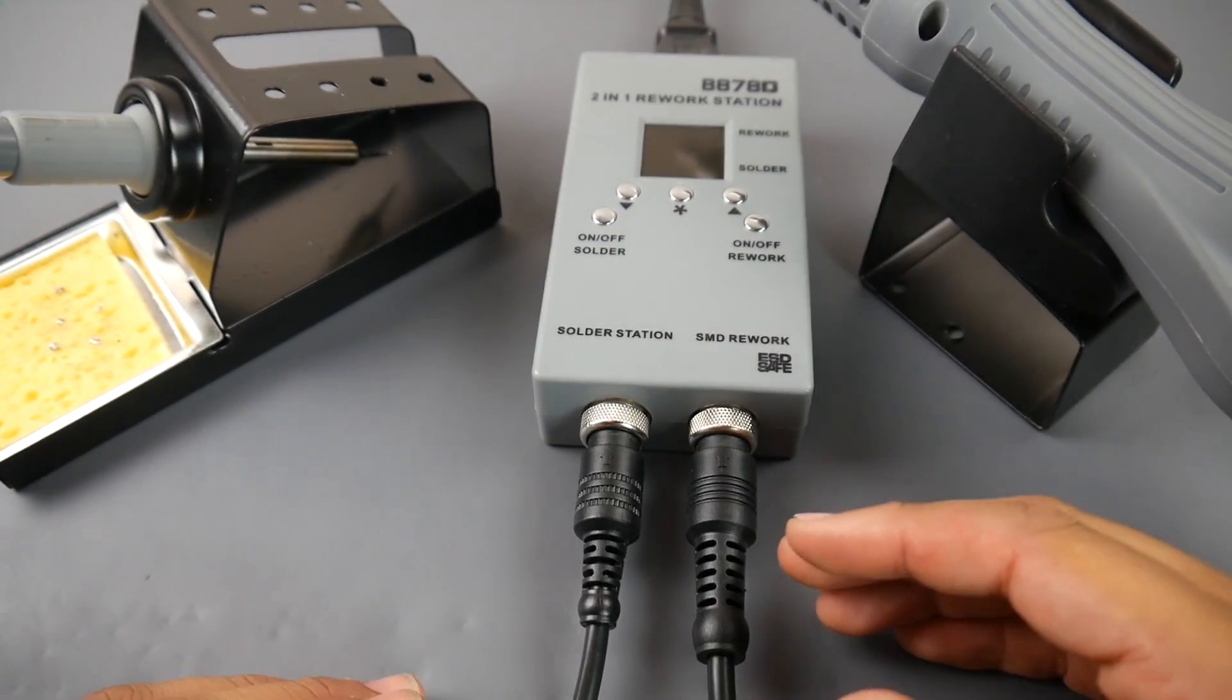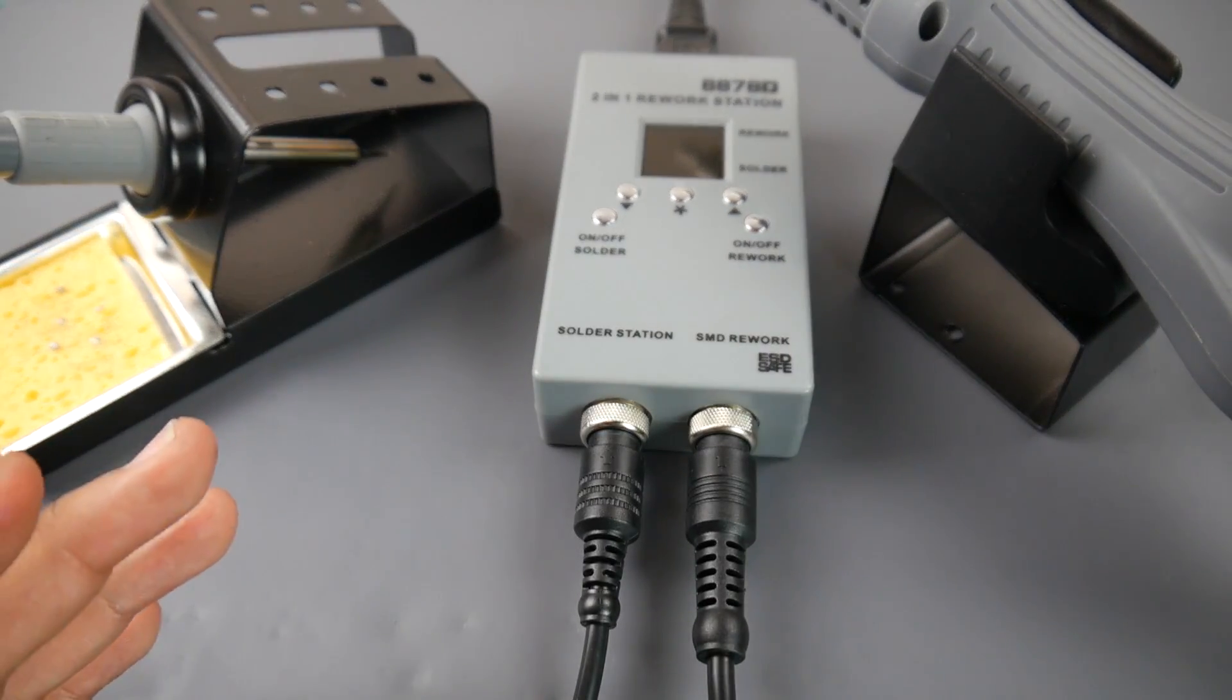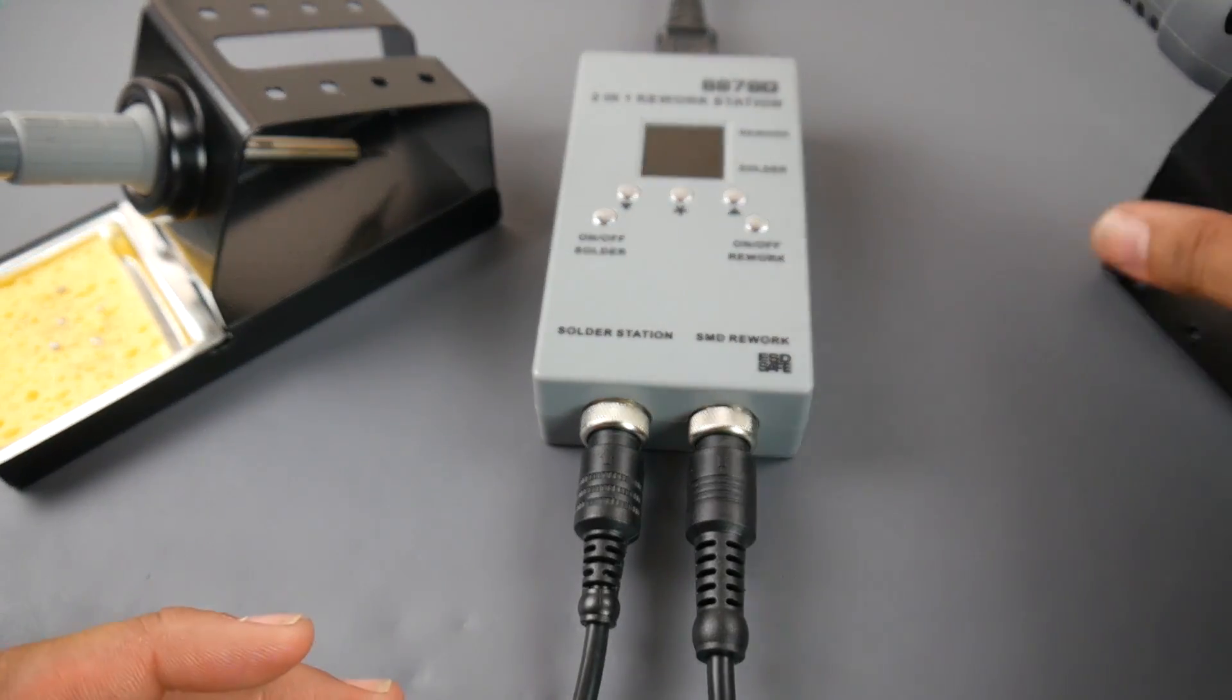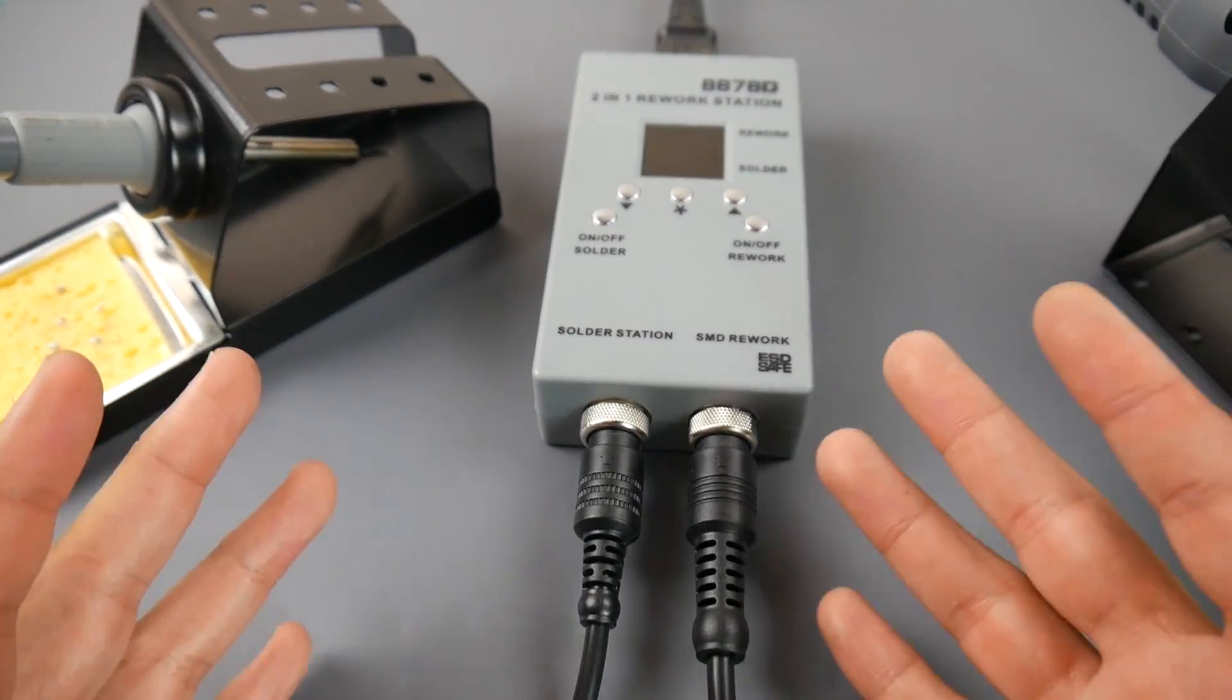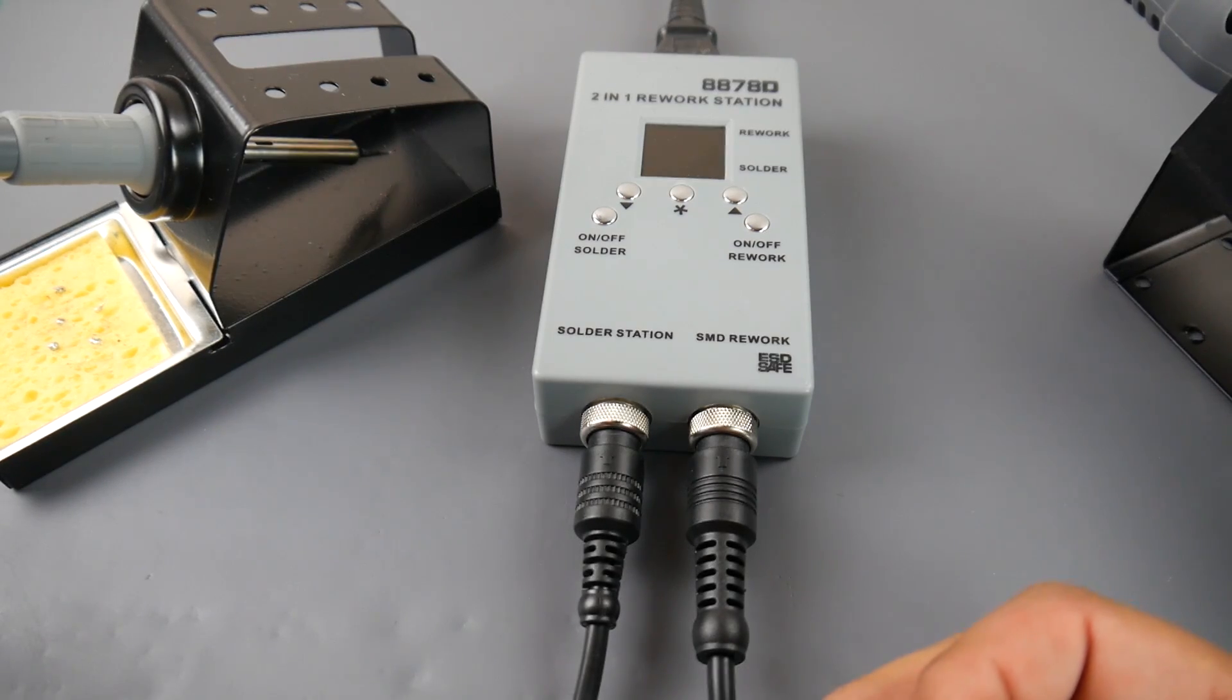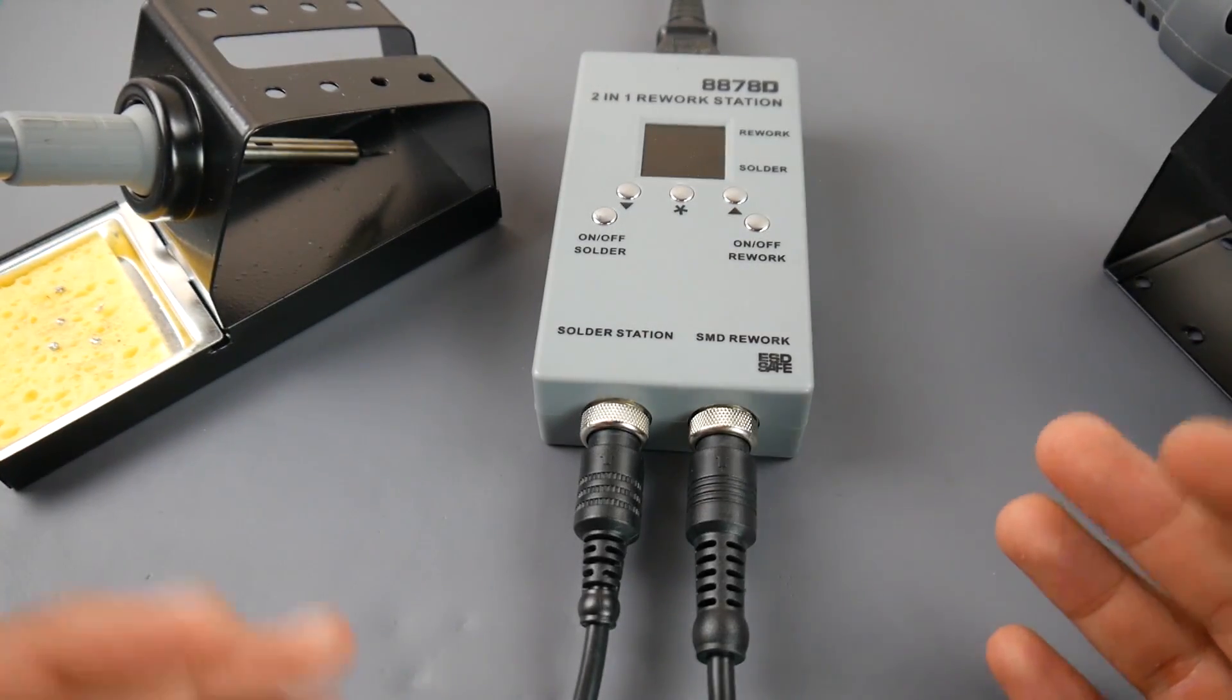Currently I'm very impressed. It's working absolutely phenomenal and I'm really happy with it. I might 3D design some kind of wall mount for this so I could mount it on the wall. For 65 bucks, the amount of features, the quality that I currently can see and have tested is an absolute amazing deal. That's going to conclude my current review of the Yaogong 8878D 2-in-1 rework station.